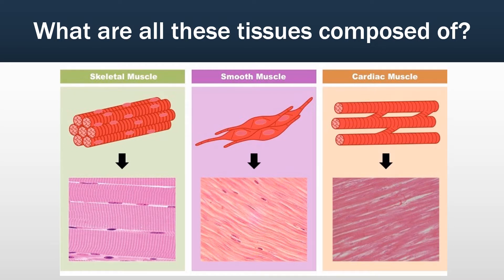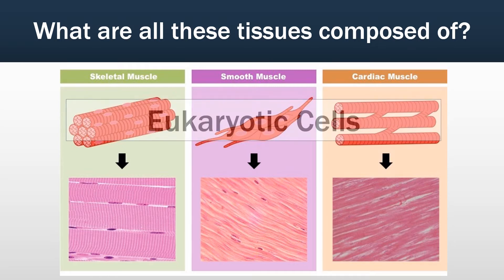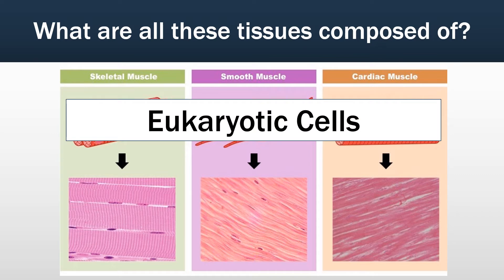Okay, so now that you all have had time to think about it, does anybody have a guess on what it is? That's right — eukaryotic cells, or just cells would have been fine too. Cells is the smaller organization level that, when you put them all together, makes tissues. And that's actually going to be the theme of this lesson today.